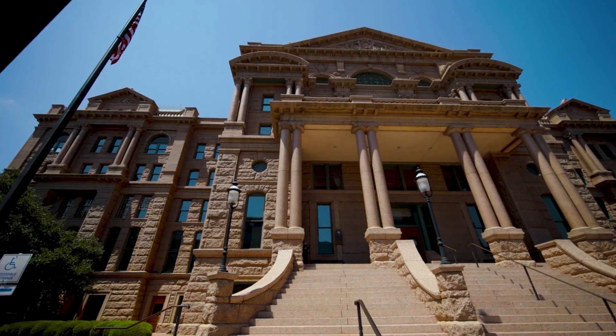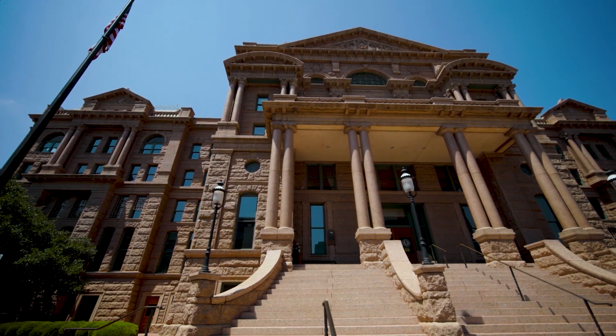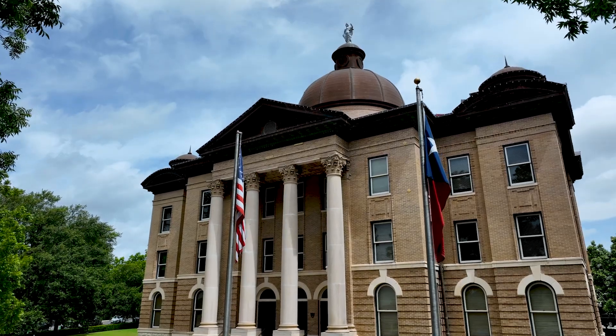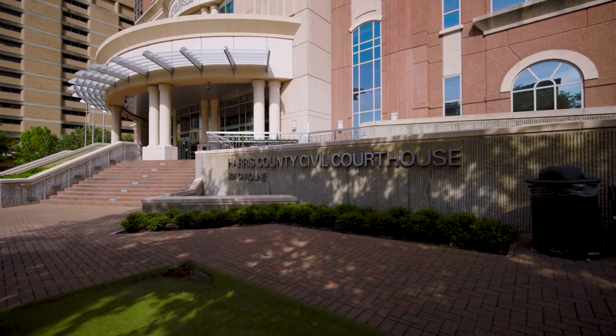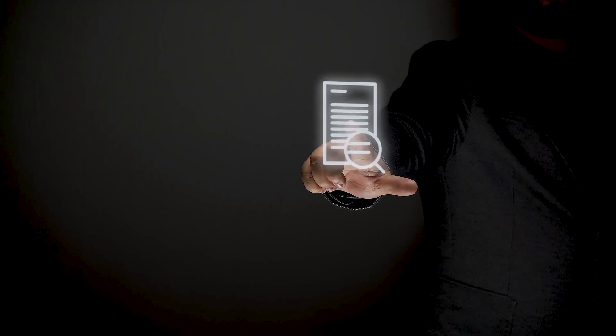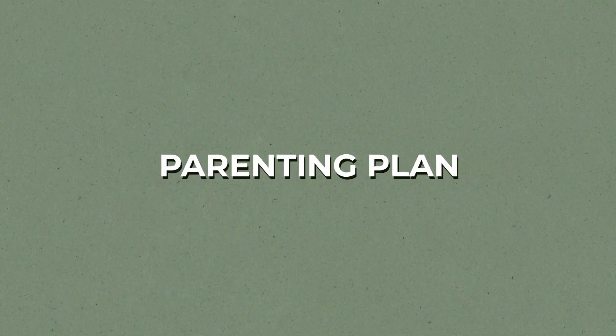The petition for divorce must be filed with the district court in the county where either you or your spouse reside. The filing fee varies by county, so it's essential to check with the local court's requirements. Along with the petition, you may need to submit additional documents such as a financial affidavit or parenting plan.